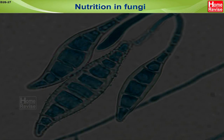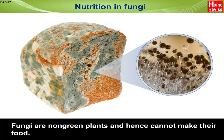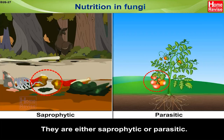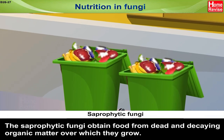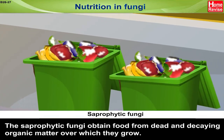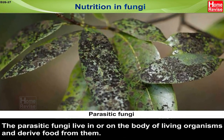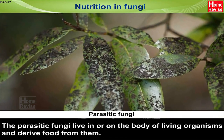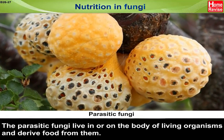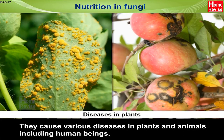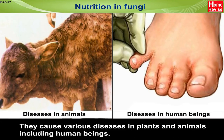Fungi are non-green plants and hence cannot make their own food. They are either saprophytic or parasitic. The saprophytic fungi obtain food from dead and decaying organic matter over which they grow. The parasitic fungi live in or on the body of living organisms and derive food from them. They cause various diseases in plants and animals, including human beings.